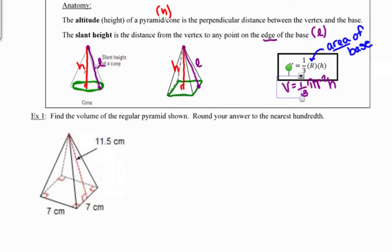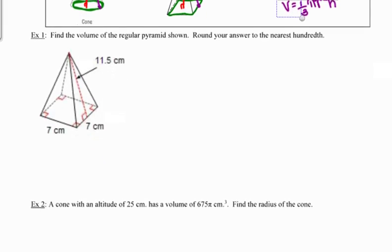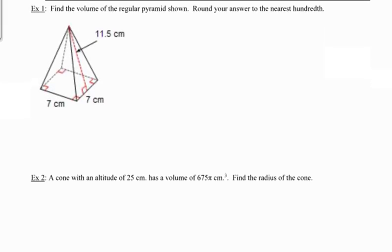This first example here, they've given us a pyramid. They're telling us that the pyramid is a regular pyramid, meaning that the base is in the shape of a regular polygon. In this case, our pyramid would be a square pyramid because regular means all equal sides and all equal angles. And the quadrilateral with all equal sides and all equal angles is the square. They want us to round our answer to the nearest hundredth.